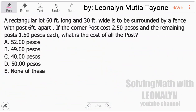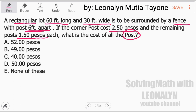Now let's read the problem again. A rectangular lot, 60 feet long, 30 feet wide, is to be surrounded by a fence with posts 6 feet apart. If the corner post costs 250 pesos and the remaining posts 150 pesos each, what is the cost of all the posts?